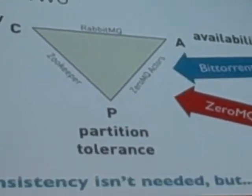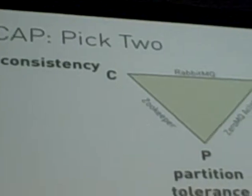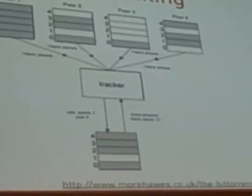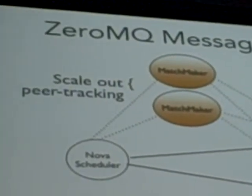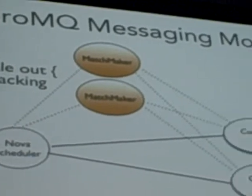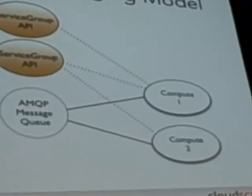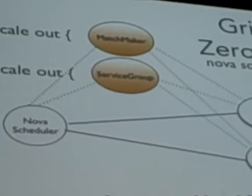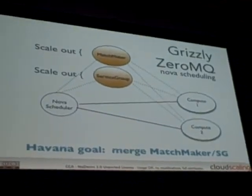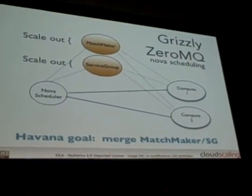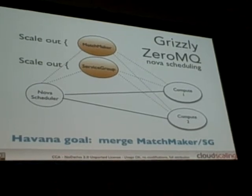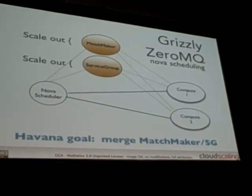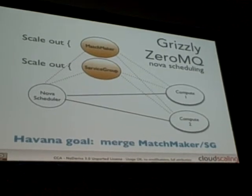We have the matchmaker, which addresses the consistency problem inherent in a distributed system — BitTorrent uses a similar pure tracking approach. For scale out we have the matchmaker, and we actually have something like that with RabbitMQ as well via the service group. XeroMQ is currently using both matchmaker and service group, and in Havana we're going to get rid of one of them — not sure which one yet, but we will consolidate them.